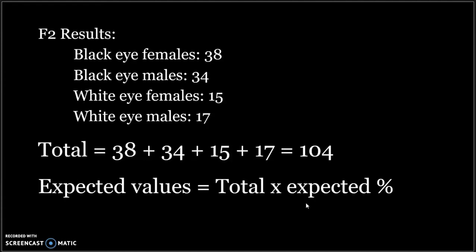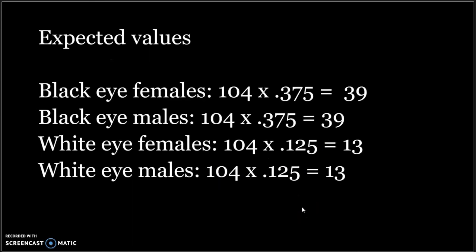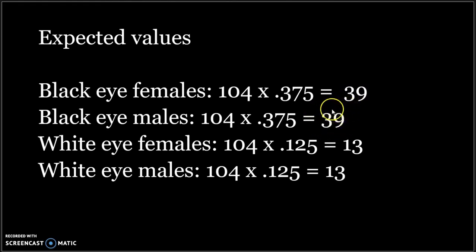First, we have to find the total number of individuals in the F2 generation by adding up all of the F2 results. In this example, there are 104 individuals in the F2 generation. Then we multiply the expected percentages by the total. For the black-eyed females, we take 104 and multiply by 37.5%, which gives us 39 — so we expect 39 females with black eyes. If you get an answer with a decimal, there's no need to round to the nearest whole number; just use the decimal for your chi-squared calculation.